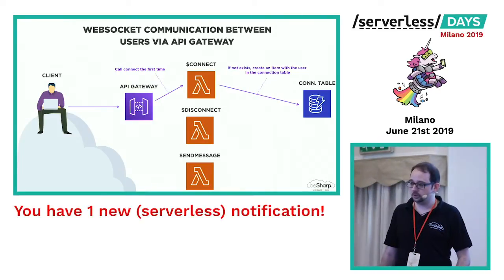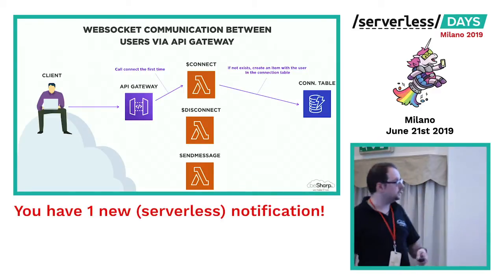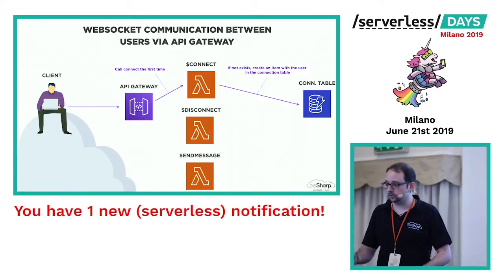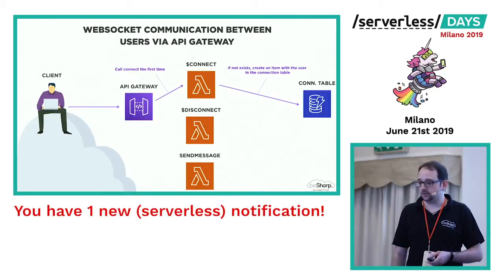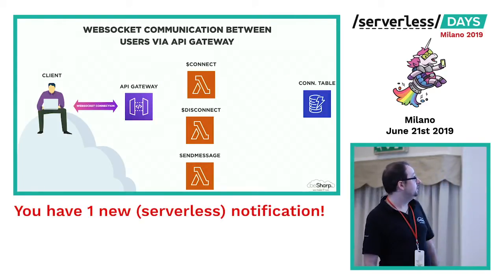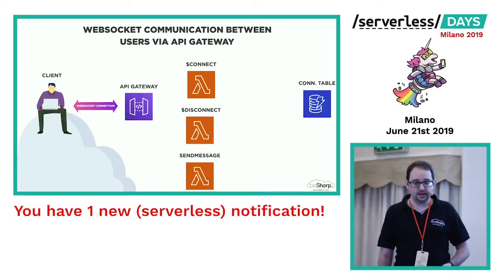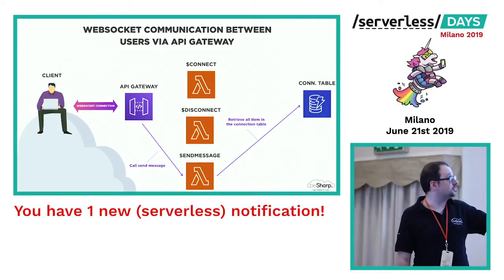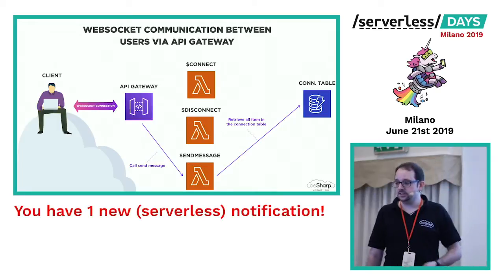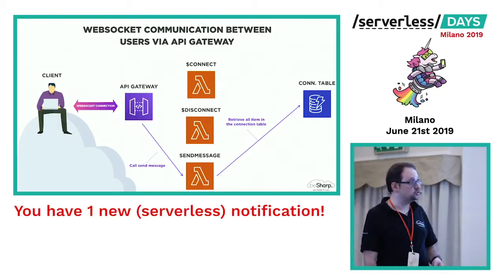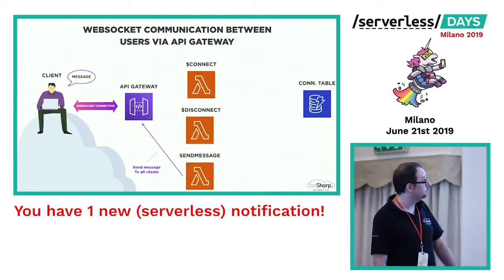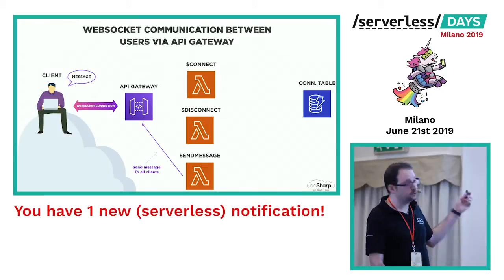Connect checks the connection table. If the connection ID is already there, it means the client is already connected to the WebSocket channel. Otherwise, it creates a row in the connection table with the connection ID of the client. Then it opens the WebSocket connection for us, and now if we send a message, we call the send message route. SendMessage checks all the connection IDs inside the connection table and sends the message to all of them. WebSocket doesn't support broadcasting, so we have to loop through each client in order to send a message to all of them.